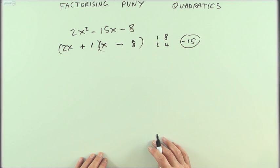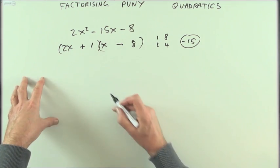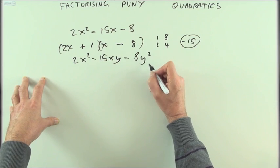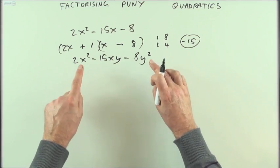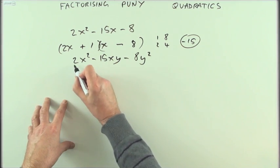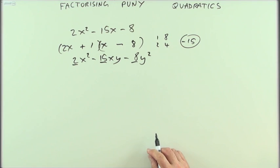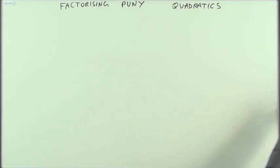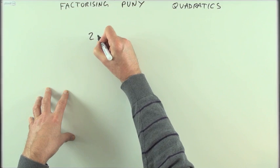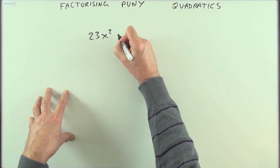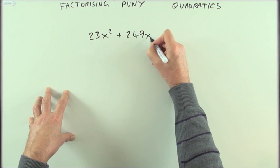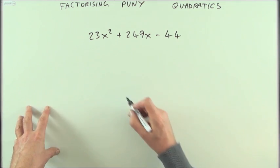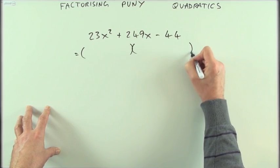That takes no thought at all. Even if it's dressed up like 2x² - 15xy - 8y² — introducing another variable — it makes absolutely no difference; only the numbers matter. Nor is something like 23x² + 249x - 44 a real challenge: it might look formidable on the surface, but it's just as harmless.